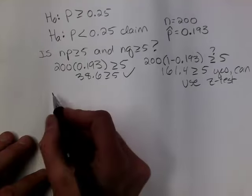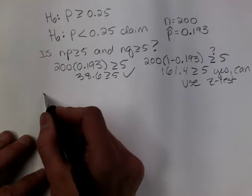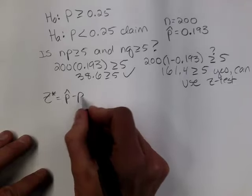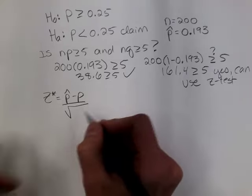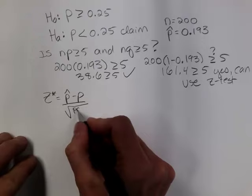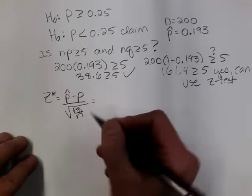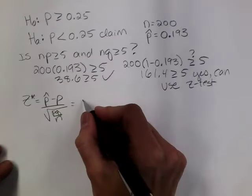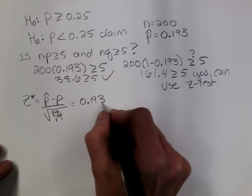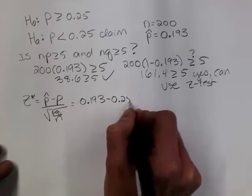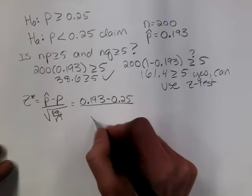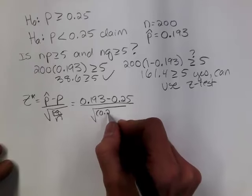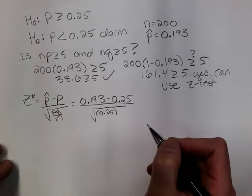Now let's find the standardized test statistic. The formula is P-hat minus P over the square root of P times Q over N. Plugging in, we have .193 minus .25 over the square root of .25 times .75 over 200.